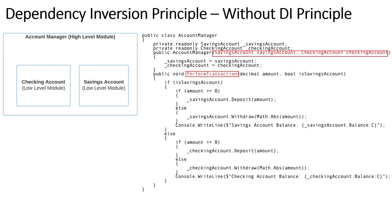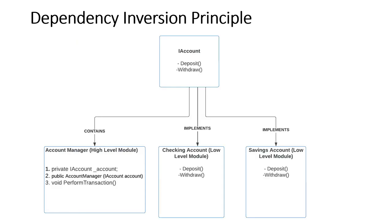To solve this with the Dependency Inversion Principle, we introduce a new interface IAccount with deposit and withdraw methods. Both the high-level module and the low-level modules depend on this interface. The high-level module contains an instance of the interface, while the low-level modules implement the interface methods. This eliminates tight coupling between the high-level and low-level modules — instead, both depend on the abstraction.